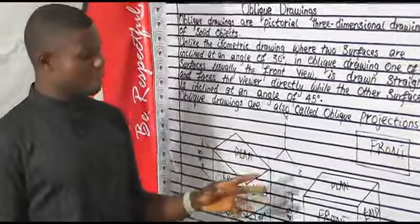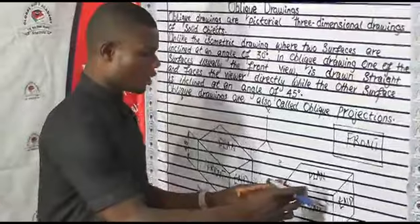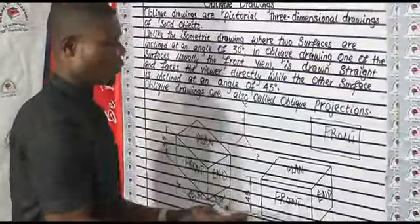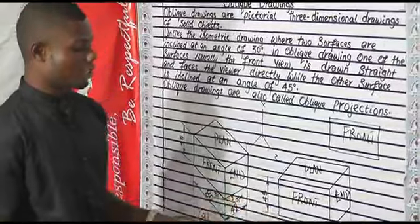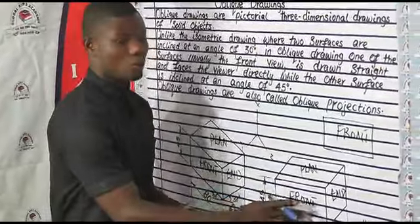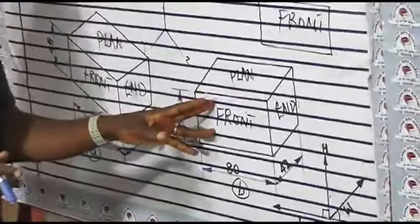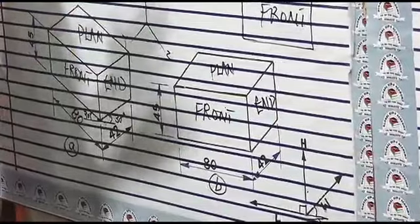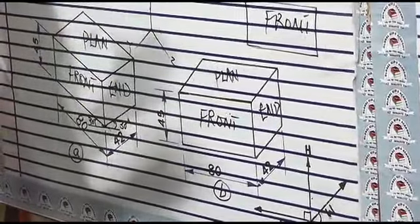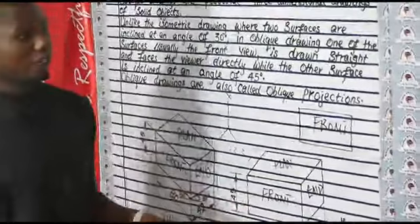Oblique drawing is the simplest method because the front faces the viewer directly. When you are converting this to orthographic projection, the front elevation will be the same as that of orthographic projection. There will be no difference between the front view facing the viewer directly and that of the orthographic projection.